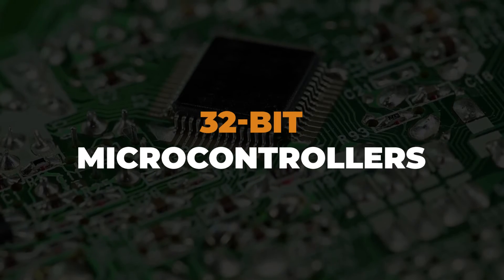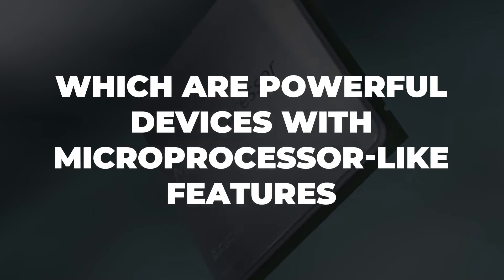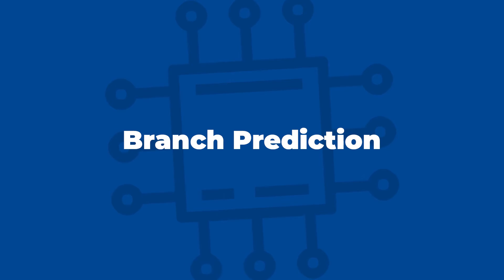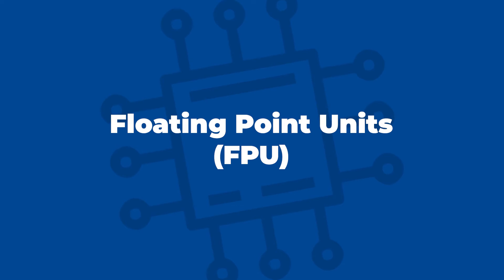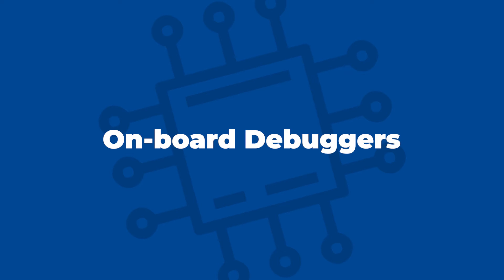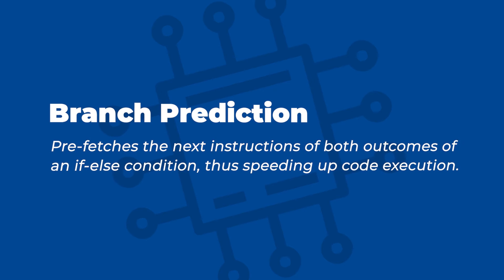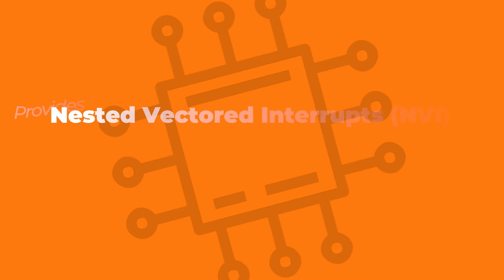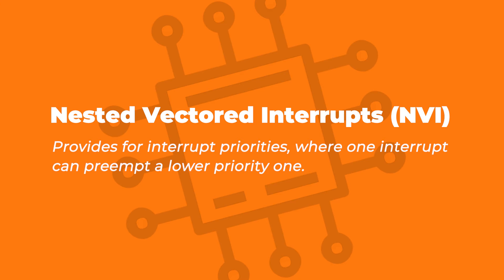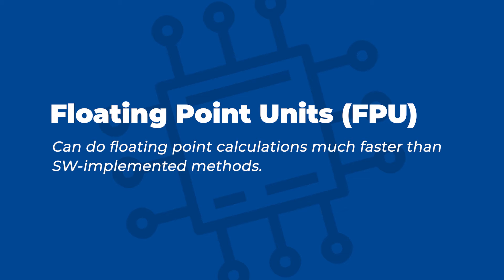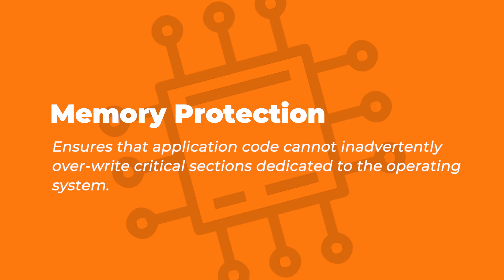Now let's move on to 32-bit microcontrollers, which are very powerful devices with microprocessor-like features. Some of the advanced features available include instruction pipelining, branch prediction, nested vectored interrupts or NVI, floating point units or FPUs, memory protection, and onboard debuggers. Instruction pipelining means that the processor core prefetches subsequent instructions ahead of time, and branch prediction prefetches the next instructions on both outcomes of an if-else condition, thus speeding up code execution. NVI provides for interrupt priorities, where one interrupt can preempt a lower-priority interrupt. Floating point units can do floating point calculations much faster than software-implemented methods. Memory protection ensures that application code cannot inadvertently overwrite critical sections dedicated to the operating system. Onboard debugging allows peaking into registers and other areas of the system to facilitate application code debugging.